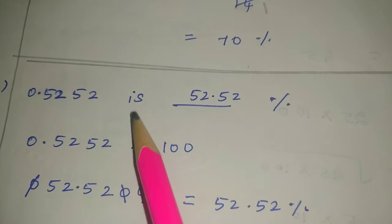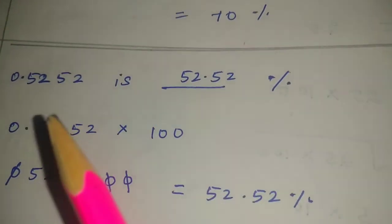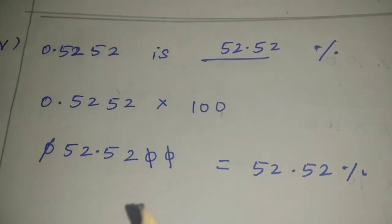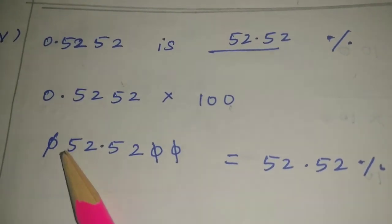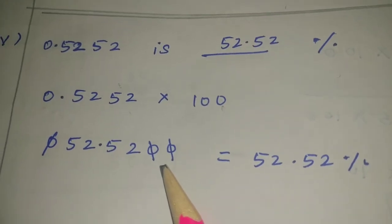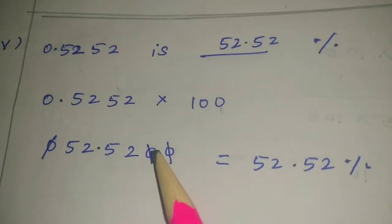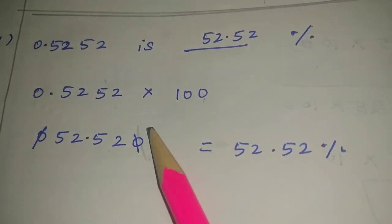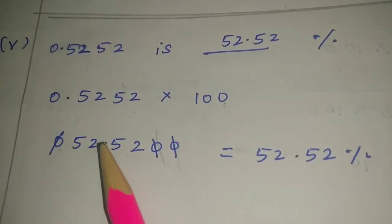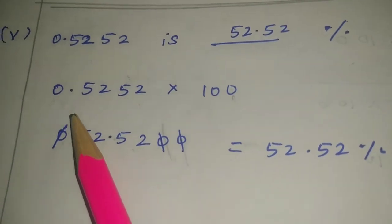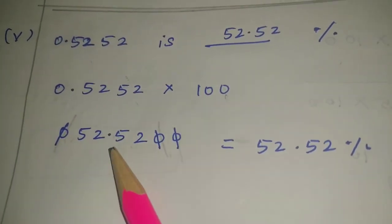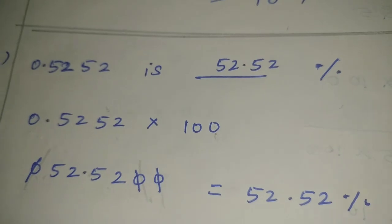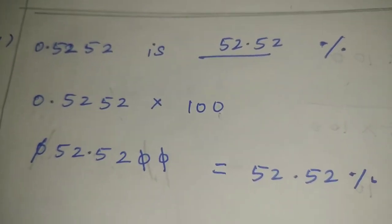Fifth sum: 0.5252 is dash percentage. To convert a decimal to percentage, multiply by 100. Moving the decimal point 2 places to the right: 0.5252 becomes 52.52. So, 0.5252 equals 52.52 percentage. Clear. Thank you.